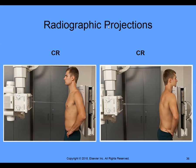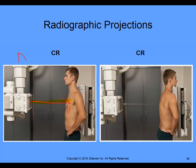So for example, in this first picture, we're paying attention to the central ray. The central ray is entering the body in the anterior aspect and it exits the posterior. So this one is going to be an AP projection. All we're doing is describing the path of the central ray.